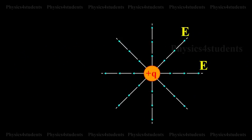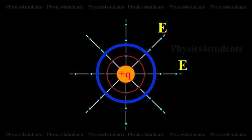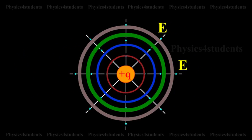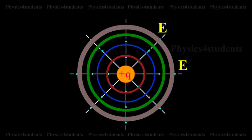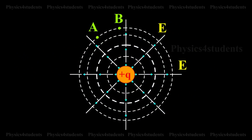In case of an isolated point charge, all points equidistant from the charge are at same potential. Thus, equipotential surface in this case will be a series of concentric spheres with the point charge as the center.